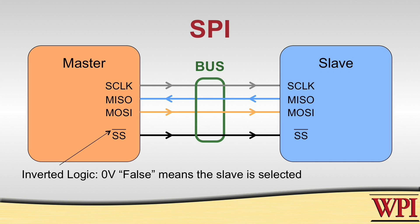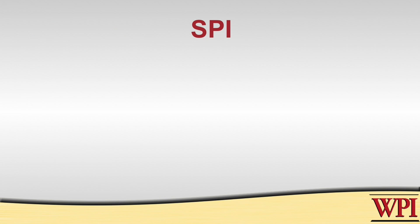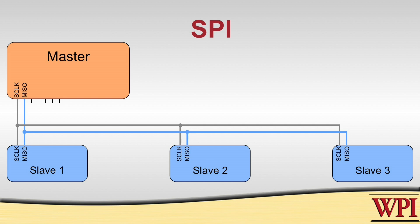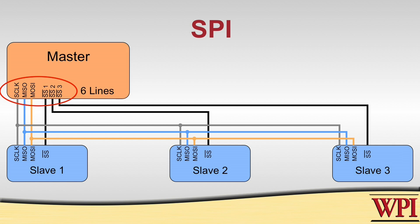If you have multiple slaves, how do you differentiate — how do you address or select one slave as opposed to another? This is done by having multiple slave select lines. For each slave device that exists in the system, you need a slave select line running from the master to that slave. For example, in this figure where we have three slaves and one master, we end up needing three shared lines — the clock line, the MISO line, and the MOSI line — plus three individual slave select lines, for a total of six lines on the master to support three slaves.